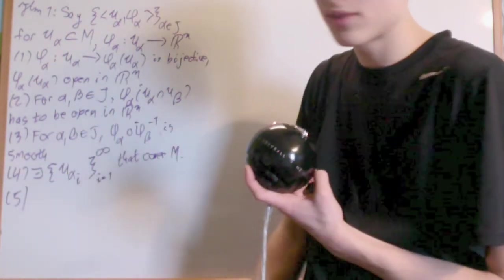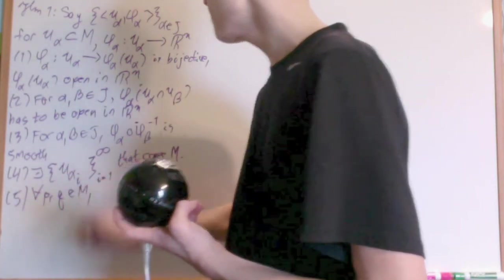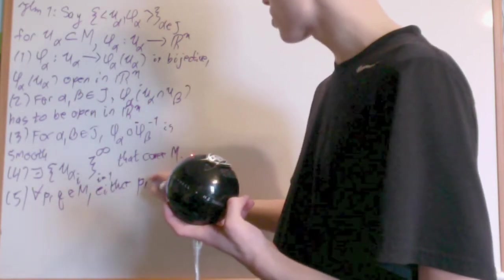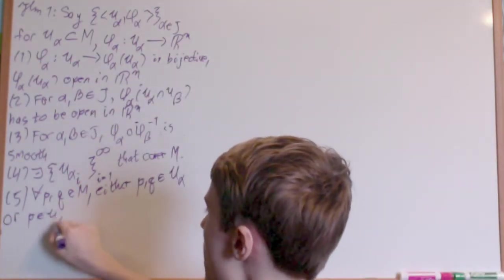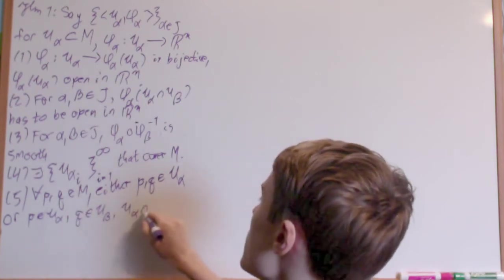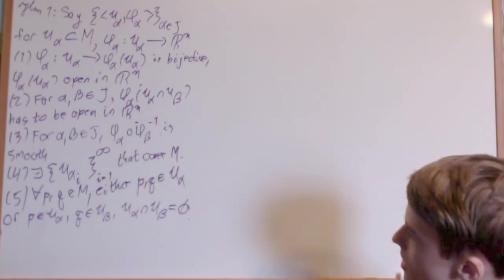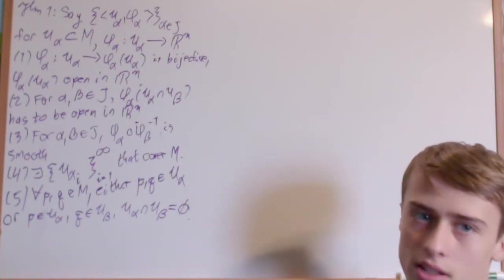Number five is the Hausdorff condition, except we have to make it a little different. So for every P and Q, an element of M, either P and Q are in the same exact open set, or P is going to be an element of U_alpha, Q is going to be an element of U_beta, and U_alpha intersect U_beta has to be empty, basically meaning either they're in the same open set, or they're in two different disjoint ones, and this is the Hausdorff condition basically.